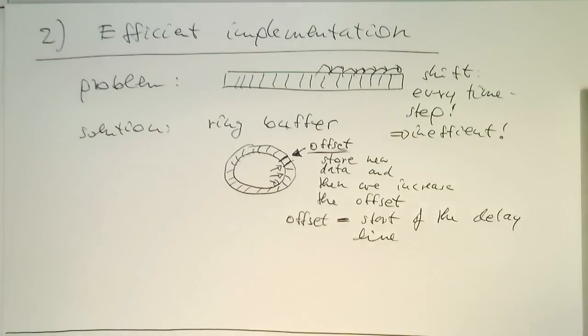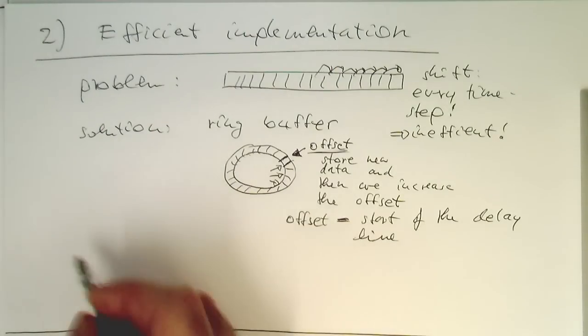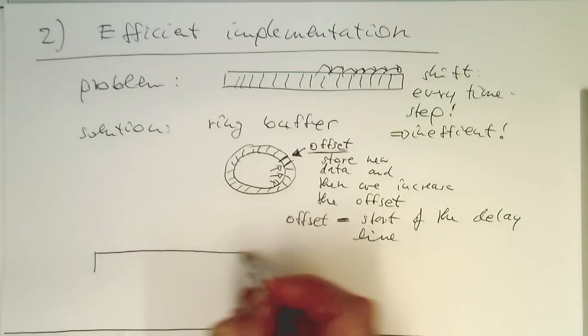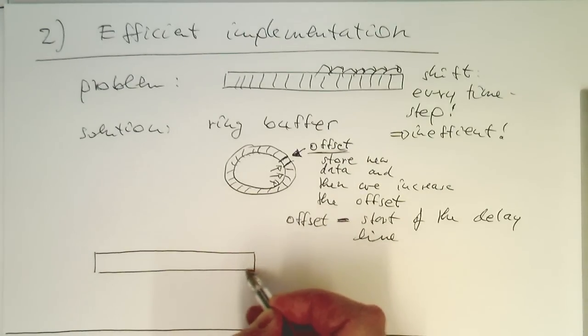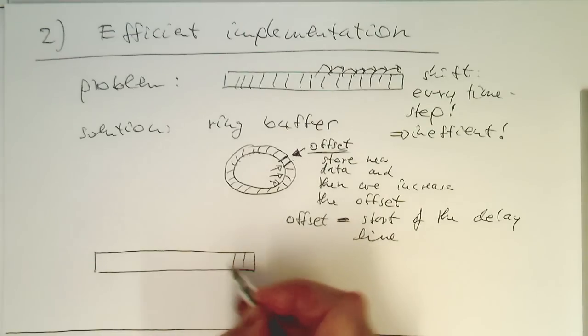Let's just move it away and draw this here. So in a real implementation, obviously, a ring in C doesn't exist. So we still have an array. So that's our array.